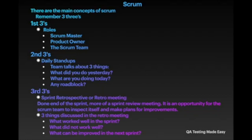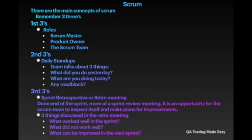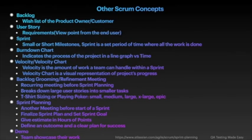Daily standups should not be more than 15 minutes for the entire team. Each person should be brief — just give a status update and move on. The third three: sprint retrospective, or retro meeting. Retros are done at the end of the sprint. It's an opportunity for the Scrum team to inspect itself and make plans for improvement. Three things discussed in the retro: what worked well in the sprint, what did not work well, and what can be improved in the next sprint.